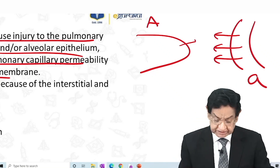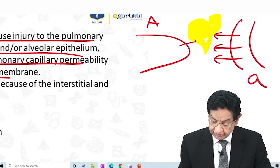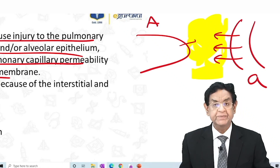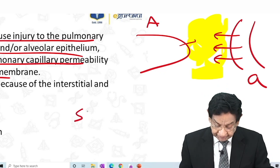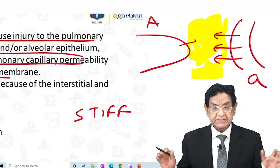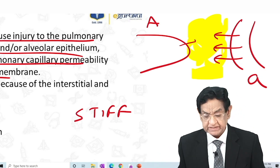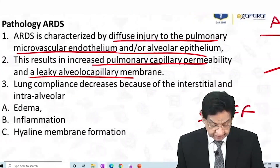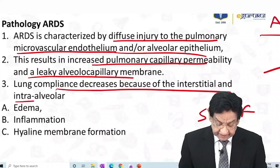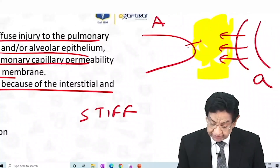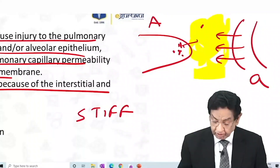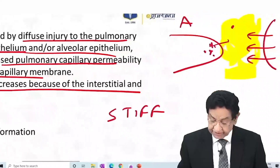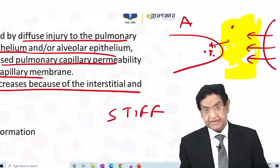Ultimately, it is the interstitial space which is full of protein-rich fluid. That's why the lung becomes stiff — stiffness of the lung occurs. Lung compliance decreases because of interstitial and intra-alveolar edema. Inflammatory cells will also be present, and finally the high protein content leads to hyaline membrane formation, which hampers oxygenation.